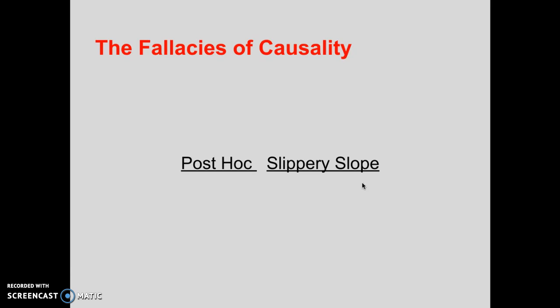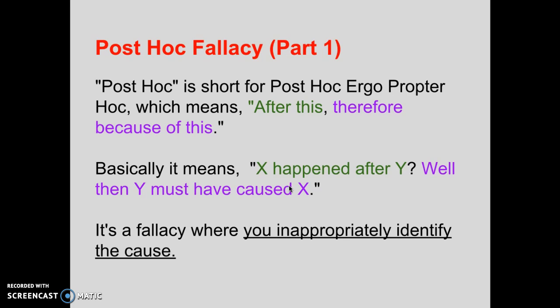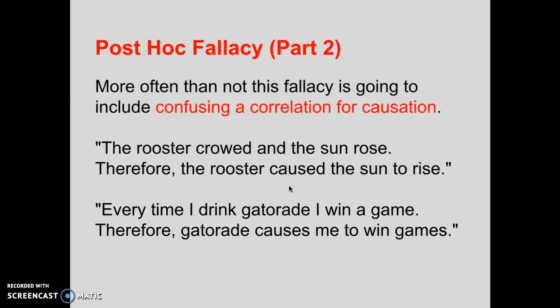The two fallacies of causality we're going to learn are the post hoc fallacy and the slippery slope fallacy. By far, the post hoc fallacy is the more important one — it's the one that connects with our discussion of causation and correlation. This is one of those fallacies where you're actually going to want to know it by name, along with the straw man fallacy and a few others. The post hoc fallacy is short for 'post hoc ergo propter hoc,' which means 'after this, therefore because of this' in Latin. It's a fallacy where you inappropriately identify the cause — more often than not, this fallacy occurs when you are confusing a correlation for causation.